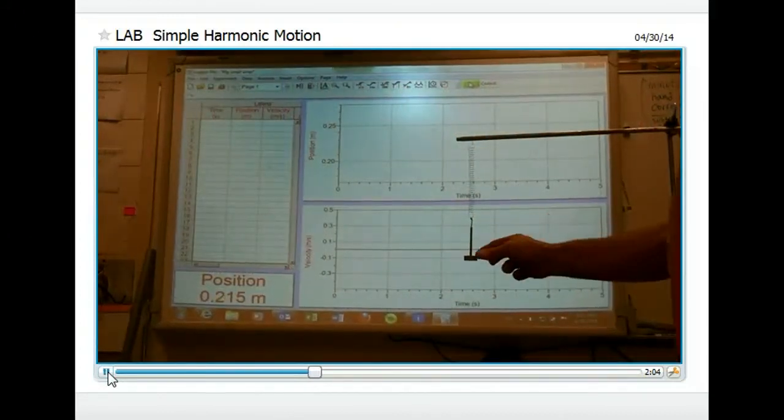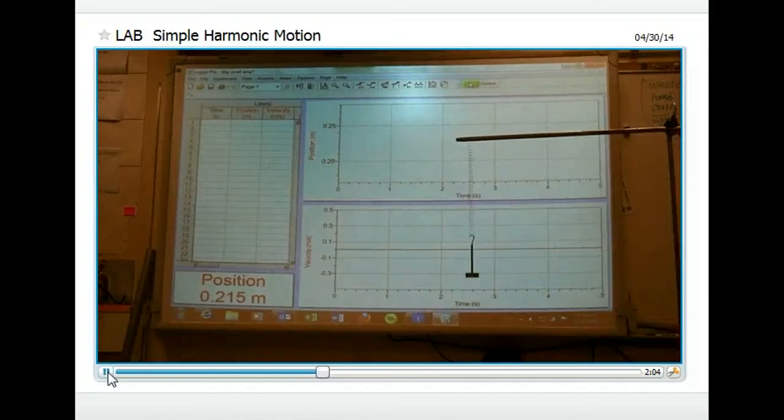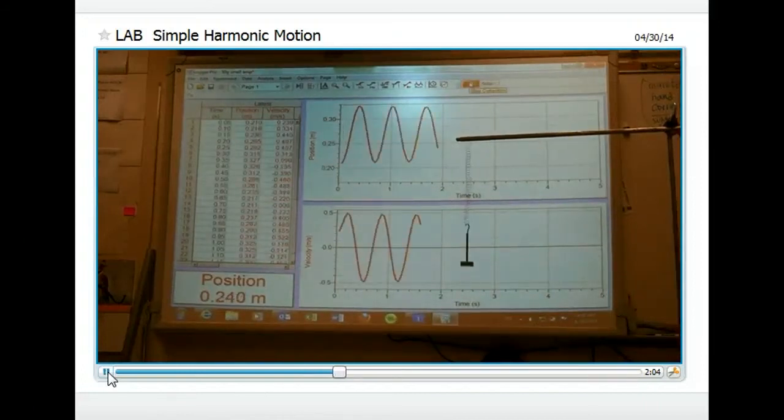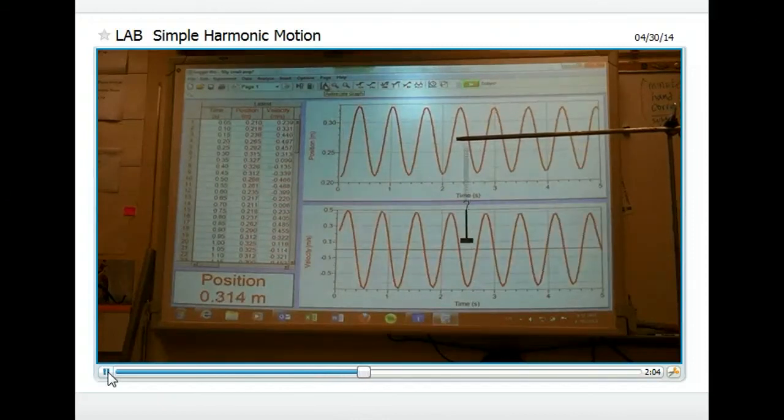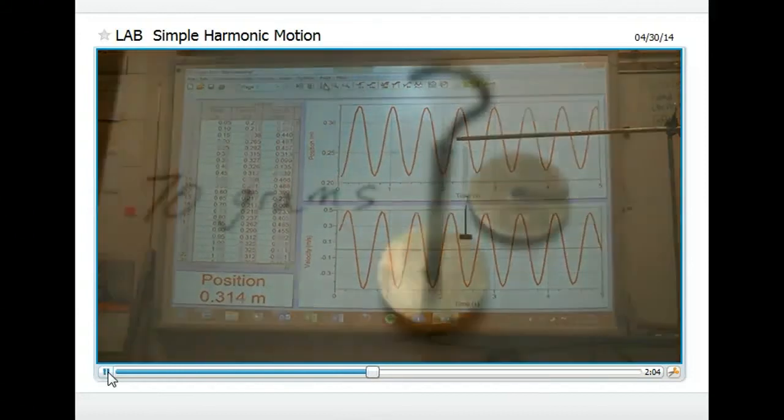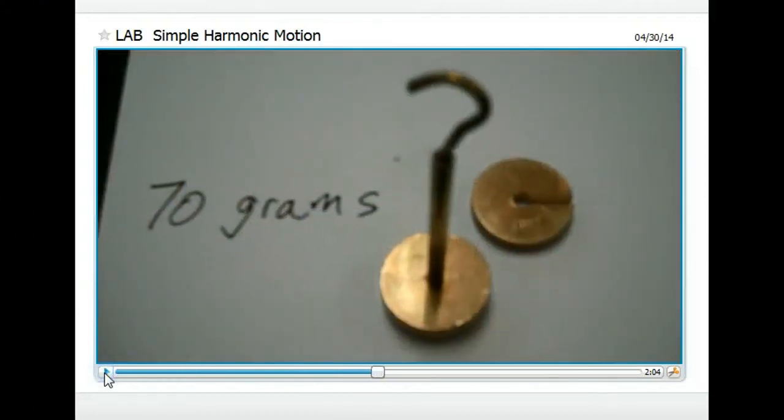Next we'll try it again but this time use a larger amplitude. We're going to compare the periods of these two oscillations. Same spring of course, just different amplitudes, and there is our oscillation for the second 50 gram amplitude. That data will be provided to you.